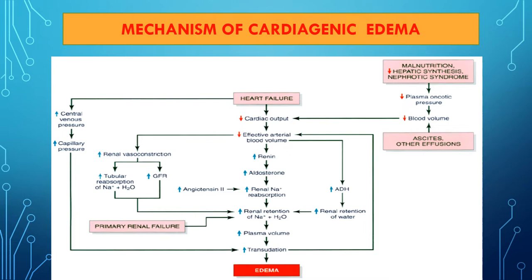In right ventricular failure, due to congestion in the inferior vena cava, edema starts from the lower extremities and gradually moves to the upper body. In left ventricular failure, due to congestion in the pulmonary circulation, pulmonary edema develops: increased hydrostatic pressure causes transudate to pass into the interstitial space of the lungs, producing interstitial pulmonary edema, and accumulation of large volumes of edematous fluid leads to alveolar edema. Pulmonary edema can also occur in inflammatory lung diseases through increased vascular permeability due to inflammatory mediators.